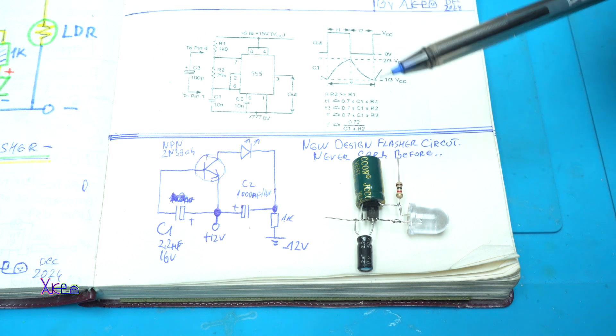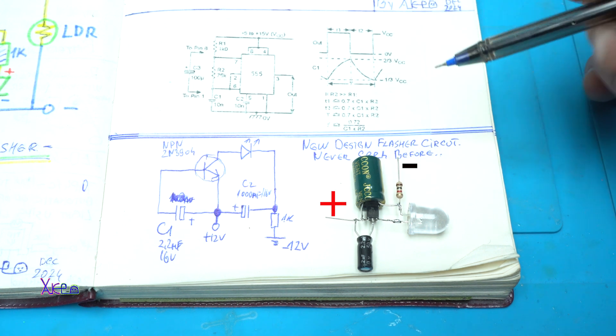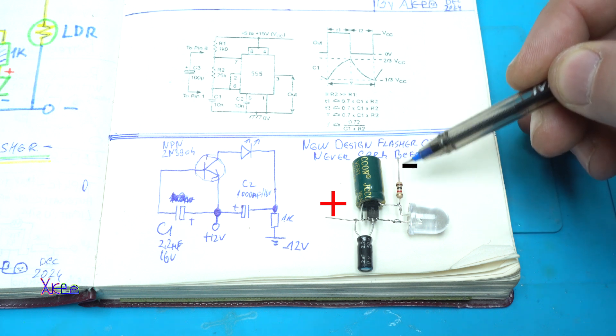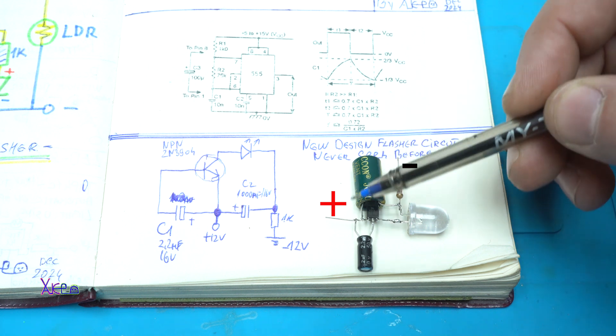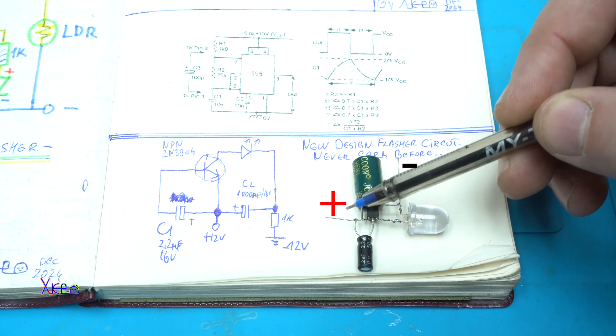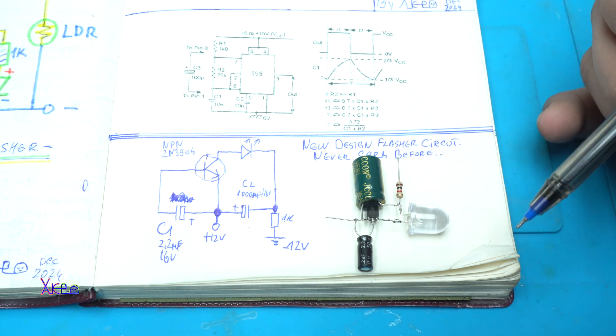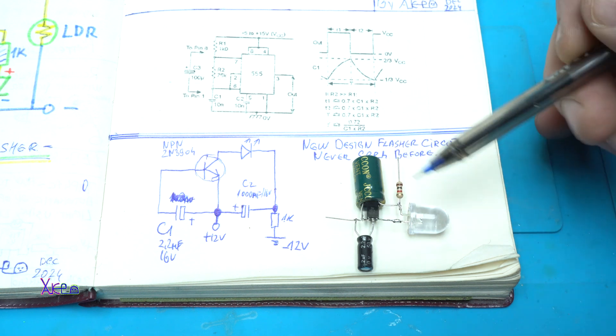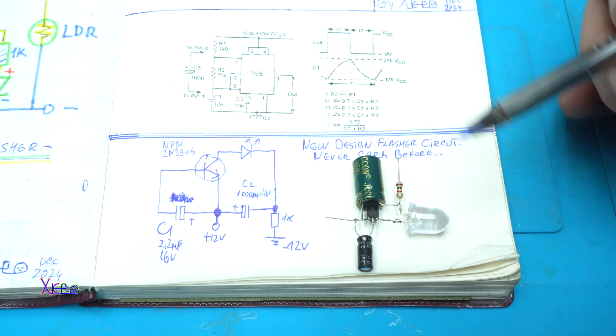The circuit is finished. I made it in two minutes. Just remember here goes negative or ground and here goes positive 12 volts. This circuit works on 12 volts. Now let's hook it up to the power supply.